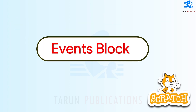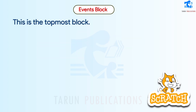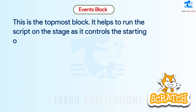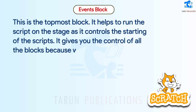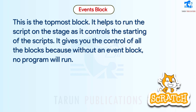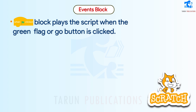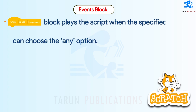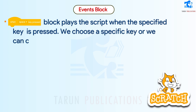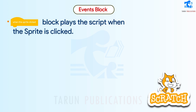Events blocks are the topmost blocks. They help run the script on the stage by controlling the starting of scripts. Without an event block, no program will run. One block plays the script when the green flag or go button is clicked. Another block plays the script when a specified key is pressed — we can choose a specific key or the 'any' option. Another block plays the script when the sprite is clicked.